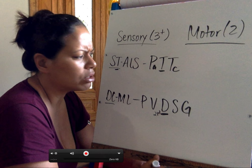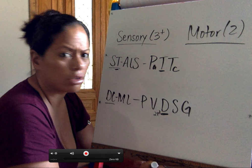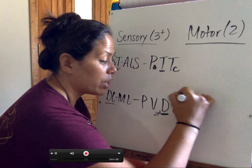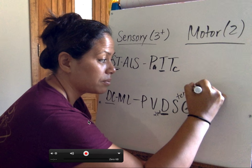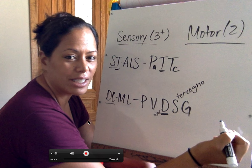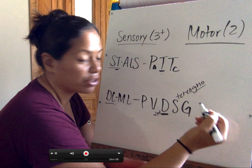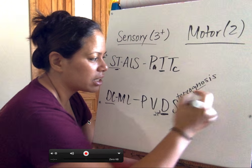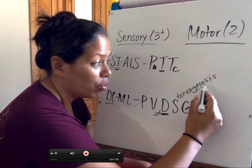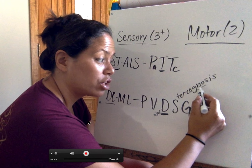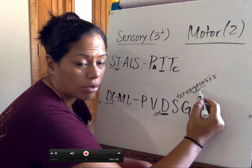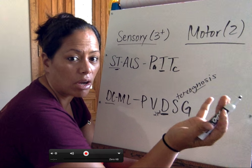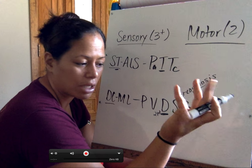S is for stereognosis — close your eyes and reach into your bag to find your keys without looking. Your ability to distinguish the shape of an object by how it feels in your hand is called stereognosis. 'Gno' means to know — so it's the condition of knowing what the shape is based on touching it without seeing it.